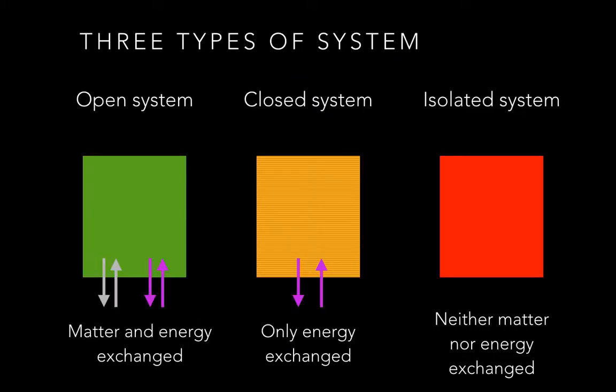There are three types of systems. An open system is where matter and energy are exchanged between the system and the environment. A closed system is where only energy can be exchanged but matter is contained within the system. An isolated system is where neither matter nor energy can be exchanged with the surroundings.